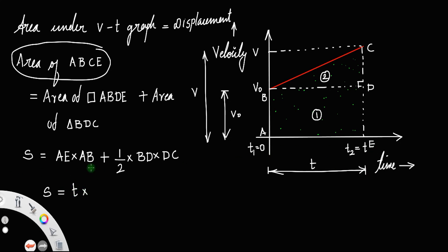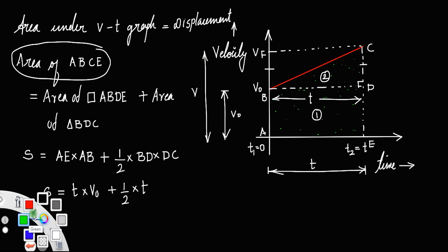So we have T times AB. But AB equals v₀. Plus half times BD — which is also equal to T — times DC. Now DC is the same as BF, which equals V minus V₀. That is, this length is the total velocity v minus the initial velocity v₀. So DC is also V minus V₀. Therefore this becomes: T into V₀ plus half into T into (V minus V₀).